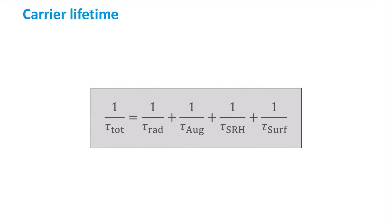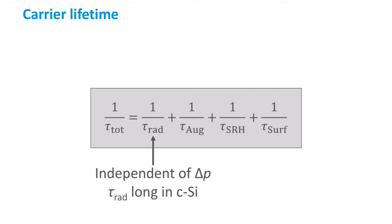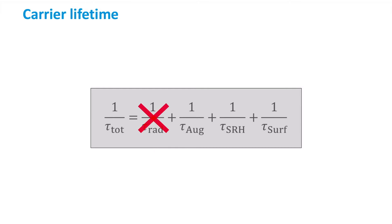Now that we understand how the lifetimes of the different processes are related to the total lifetime, we will analyse the dependence of this total lifetime on the minority carrier concentration. This minority carrier concentration is injected into the system by a generation process — in our case illumination — and usually referred to as the injection level delta p. The radiative lifetime is independent of the carrier concentrations, as we have seen earlier, and is very long for crystalline silicon. Therefore, we do not need to consider this term when varying the injection level.